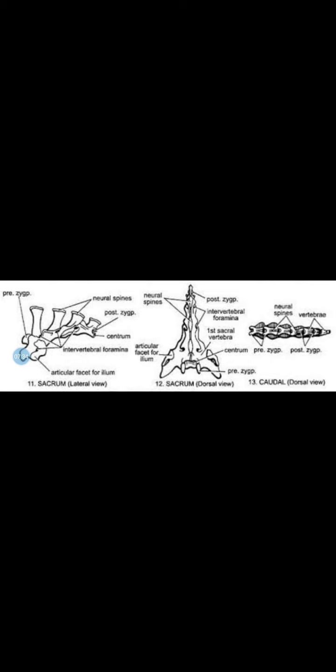The parts are reduced in the posterior caudal vertebrae. There is only one structure remaining, which has a hollow center. In the caudal vertebrae, from around the 14th to 15th vertebrae, the spinal cord projects as a hollow tube through the last few vertebrae.